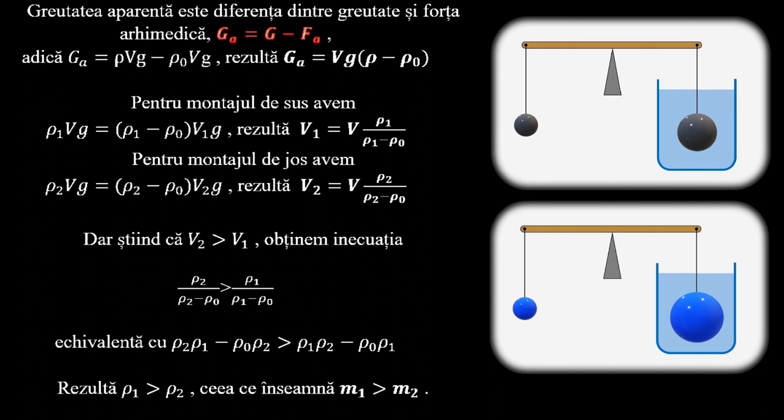Pentru montajul de sus avem condiția de echilibru ρ1·V·g = (ρ1 - ρ0)·V1·g, din care rezultă că V1 = V·ρ1/(ρ1 - ρ0).